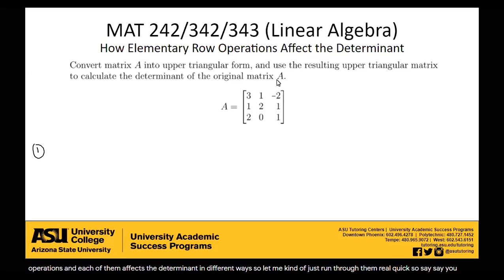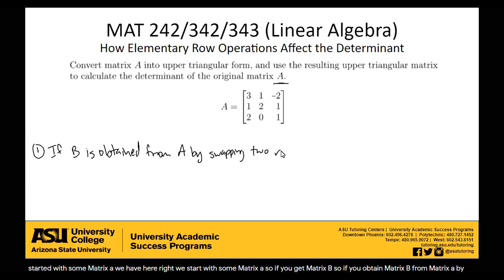So say you started with some matrix A, like we have here, right? We start with some matrix A. So if you obtain matrix B from matrix A by swapping two rows, then let's see how that affects the determinant. So all I'm saying is I started with my matrix A, I swapped any two rows, and now I have the matrix B. What does the determinant of B look like now with respect to the determinant of A? Well, what this does is it just sort of negates it. So the determinant of B is now the negative of the determinant of A. So it swaps the sign for the determinant of A. So that's what swapping rows does. It flips the sign of the determinant.